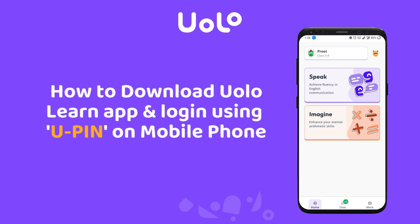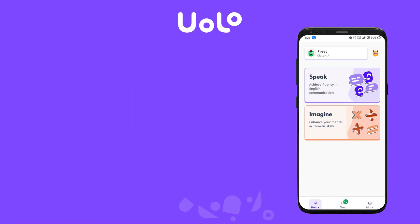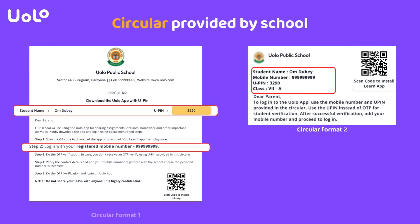Hi students, let's learn how to download YOLO Learn app and log in using UPIN on mobile phone. A circular will be shared with your child by the school, mentioning their name, class, phone number, and UPIN credentials, which looks like either of the below.